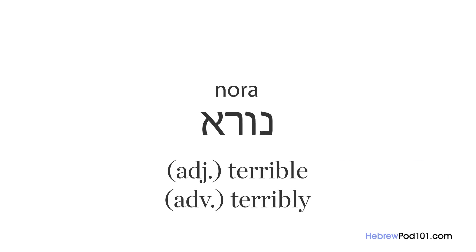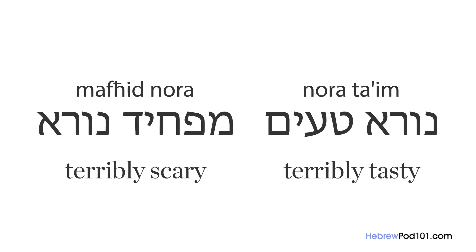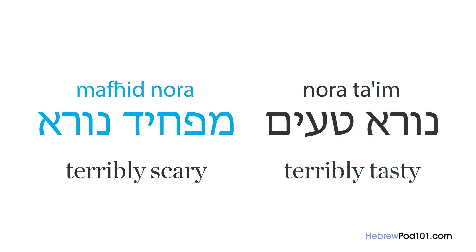Our last word is 'nora.' This word can be either an adjective meaning 'terrible' or an adverb meaning 'terribly,' used together with negative or positive adjectives. Like 'me'od,' it can appear either before or after the adjective. For example: 'nora taim' — terribly tasty, 'mufrid nora' — terribly scary. Adverbs can make your sentence much more expressive, so try and use them.